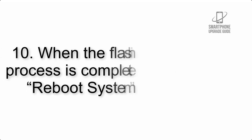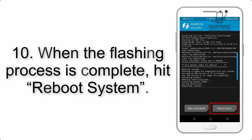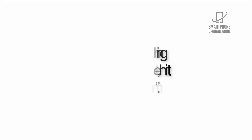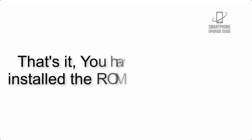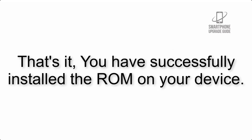Step 9: After GApps flashing completes, select Wipe Cache and Dalvik from the bottom left side of the screen and swipe to wipe. Step 10: When the flashing process is complete, hit Reboot System. That's it — you have successfully installed the ROM on your device.